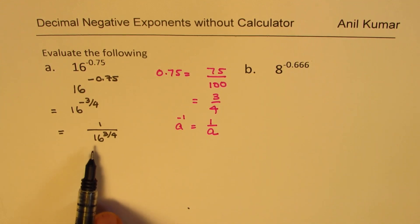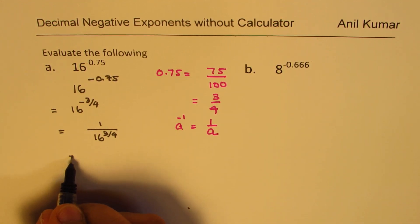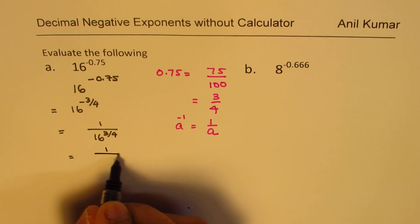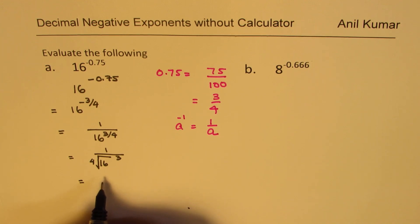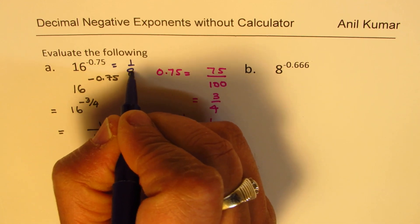Now, when I say 16 to the power of 3 over 4, it means cube of 16 and 4th root of 16. So we could write this as 4th root of 16 and then we can cube it. Now fourth root of 16 is 2. So we get 1 over 2 cube and 2 cube is 8. So we get 1 over 8 as our answer. So that is how you can evaluate the value.